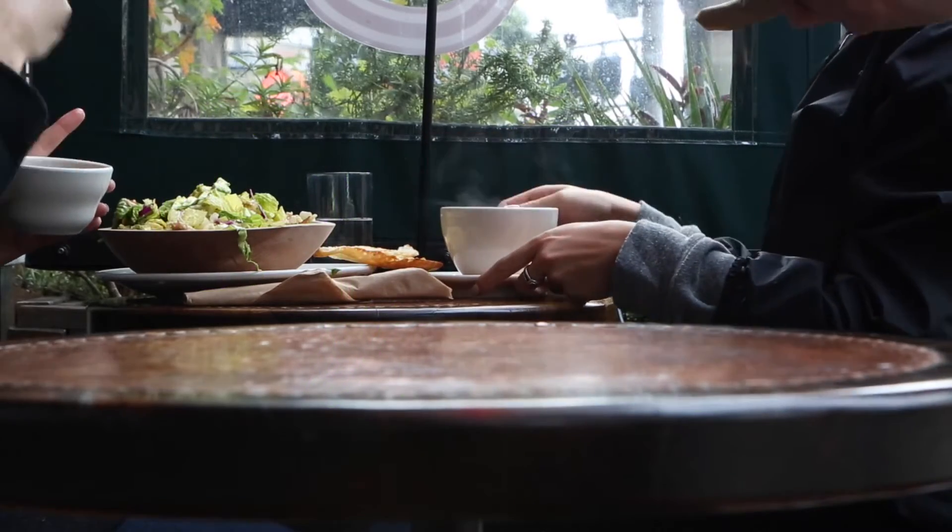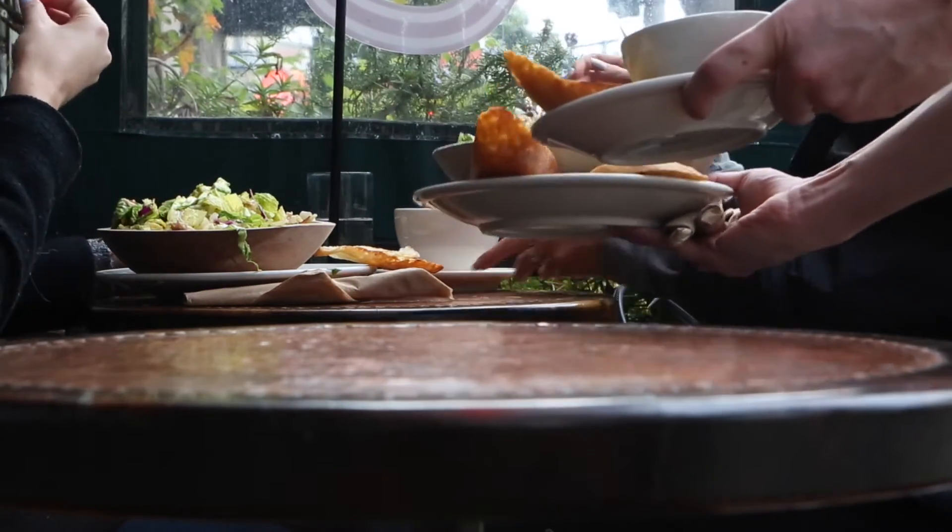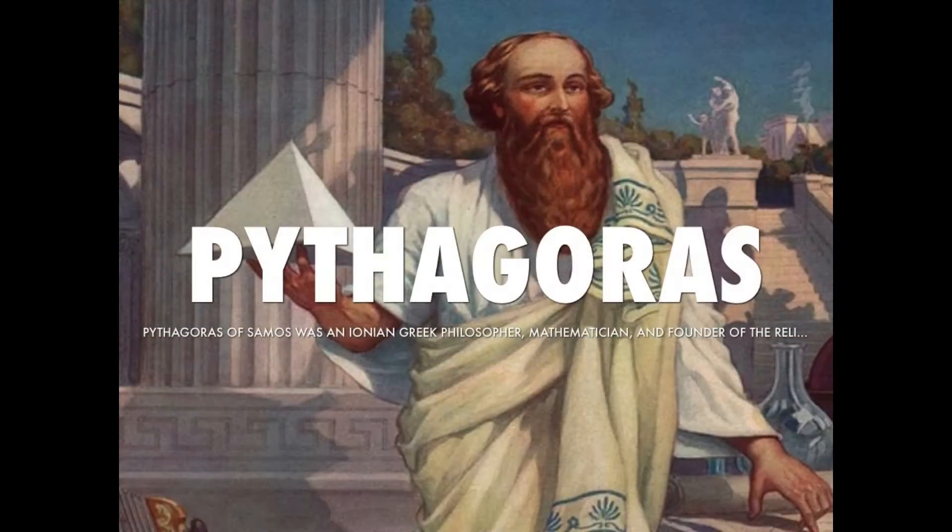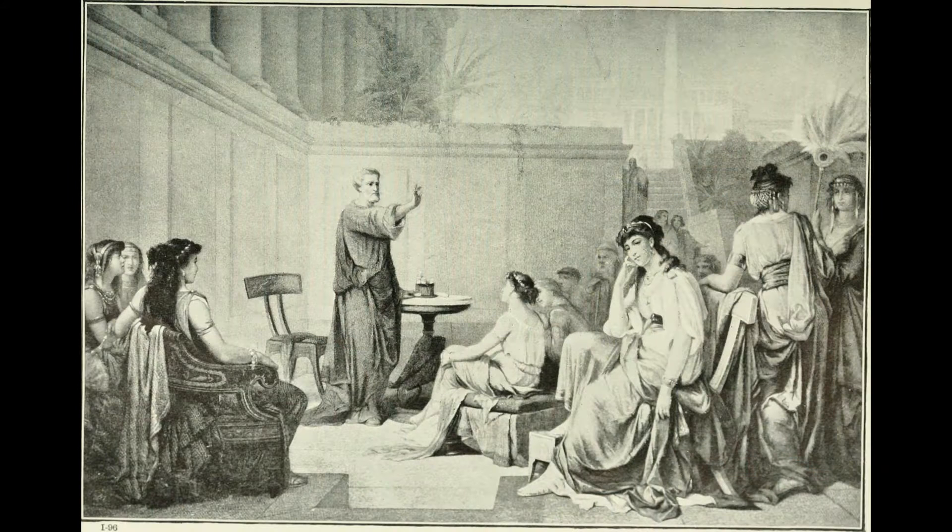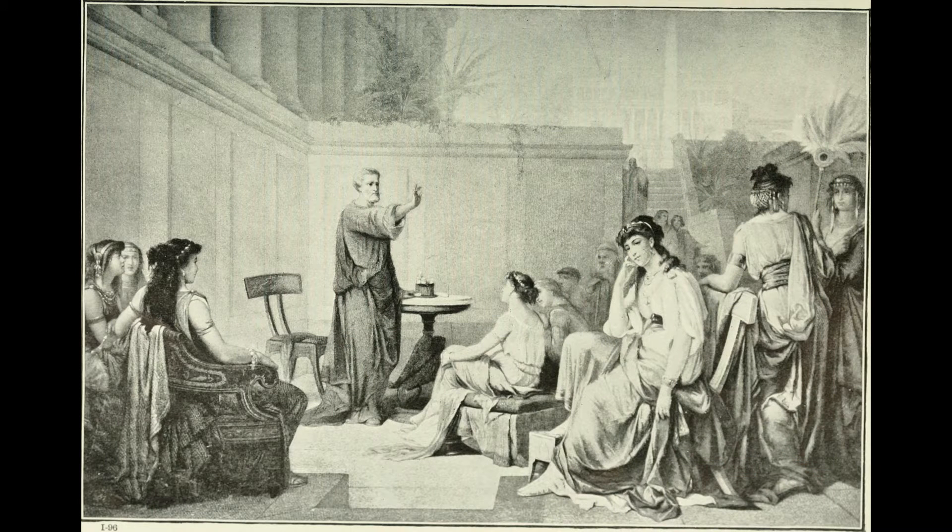So, if we want to talk about veganism, we must first talk about vegetarianism. Vegetarianism is first spoken about by the Greek mathematician and philosopher Pythagoras of Samos, about 500 BC. Along with his theorem about right triangles, Pythagoras encouraged goodwill amongst all species, including humans.